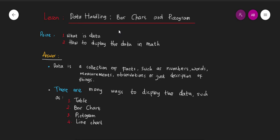Now let's move on to the lesson. The key points we have to learn today are: what is data, and how to display data. Let's start with the definition. Data is a collection of facts such as numbers, words, measurements, observations, or descriptions of things. For example, you can collect data about people who share the same hobby as you, or find out the different heights of all students in your classroom.